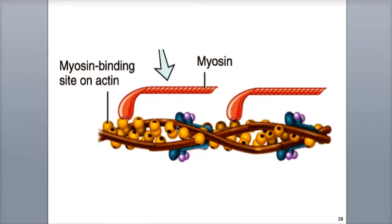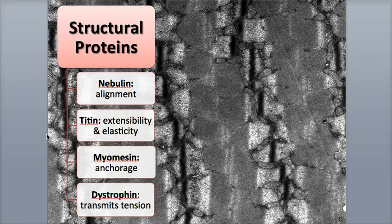We'll look more at the contraction cycle and the elements of muscle contraction in a later podcast. There are a dozen or so different structural proteins, which play many roles in maintaining the shape, structure, and alignment of the sarcomere.